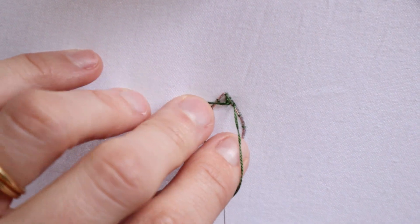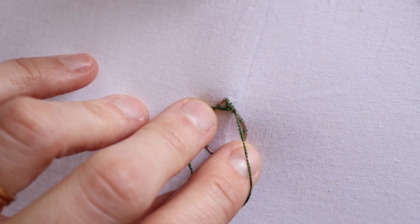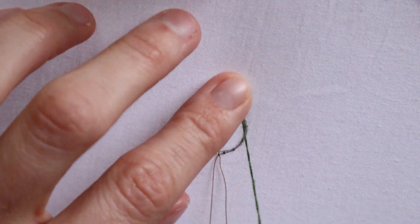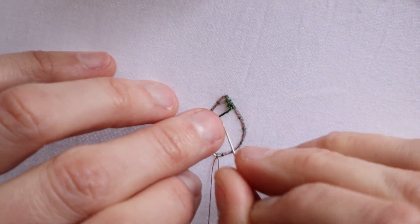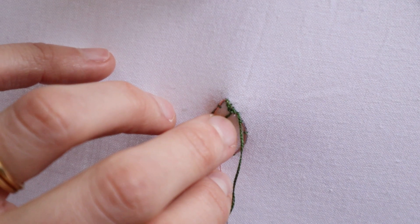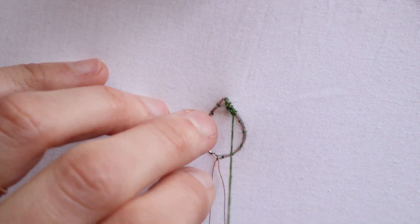You want them to be relatively close together. And also, side note, I am using two strands for this. You can use as many as you'd like. I would say probably one to two is best for this. So I'm just gonna work my way around using this blanket stitch.